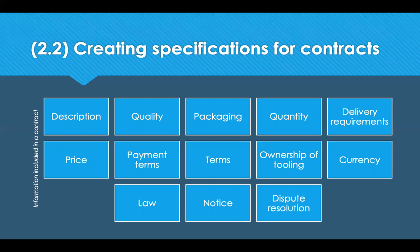The four functions of a specification are: it indicates what's fit for purpose, providing information of what is intended to be supplied with the purpose, quality and performance clearly stated; you can clearly communicate that requirement to your user and also your supplier; and if you end up in a dispute with the supplier, it helps provide evidence of what the performance standard should have been. A lot of what's included in a contract comes from the specification — the description, quality, packaging, quantity — but you'll also have things like delivery requirements, price, payment terms, overall terms and conditions, length of contract, currency and governing law, ownership of tooling, notice periods for termination, and what to do in a dispute.